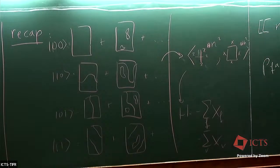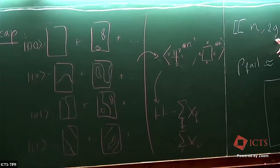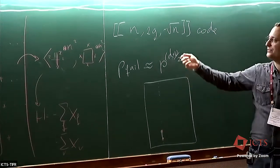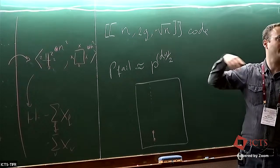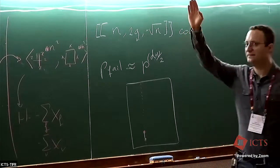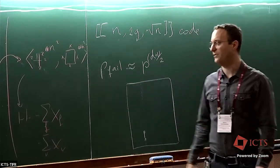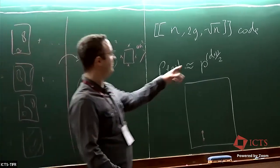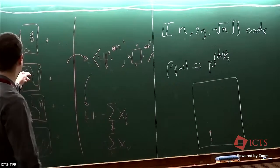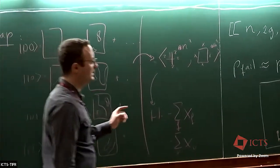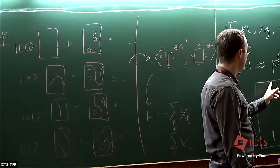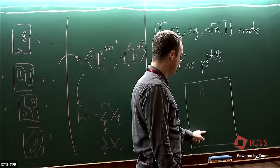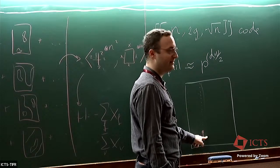The surface code is a pretty good code. With n qubits we can encode 2g logical qubits, where g is the number of handles or holes, and the distance is proportional to the square root of n. We don't need to correct all errors of size square root of n — only those that create a non-trivial loop. More precisely, we need to prevent errors that span more than half the loop, because if they span more than half, the decoder will complete it the wrong way, creating a logical bit flip.